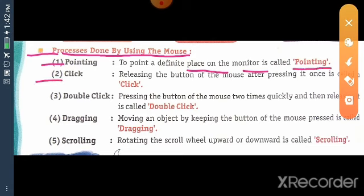Second. Releasing the button of mouse after pressing it once is called a click. Third one, double click. Pressing the button of mouse two times quickly, and then release it is called double click.